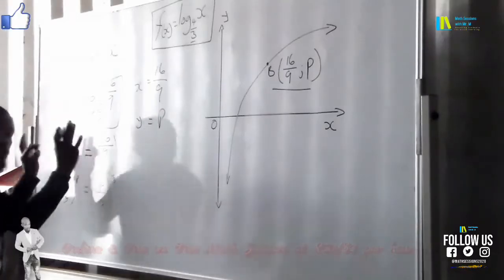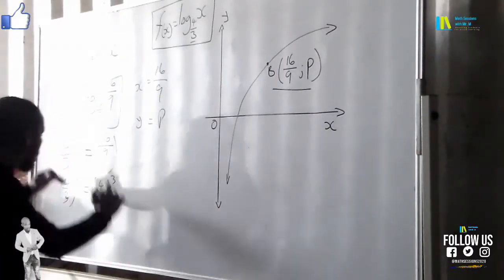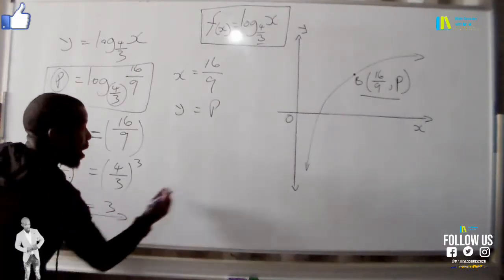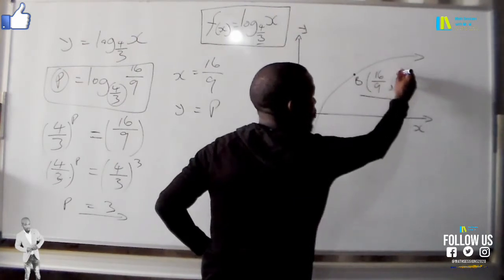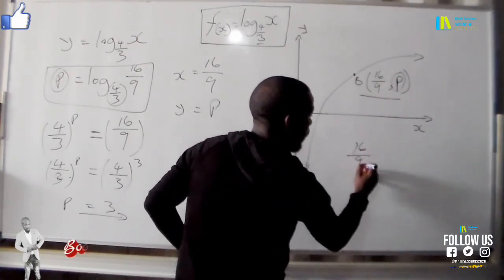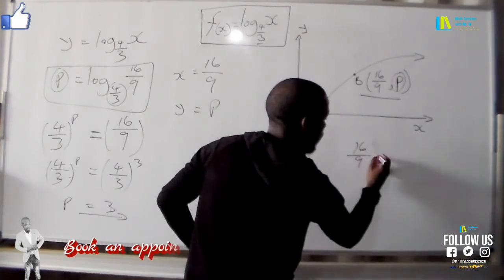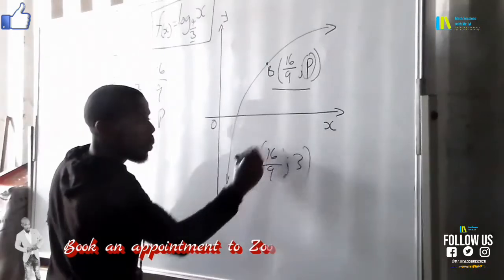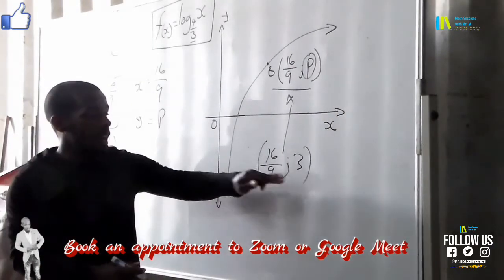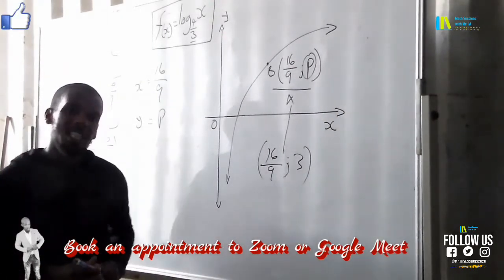If the bases now are the same we just drop now the exponents, which is p equals 2. We have basically found now the value of p which has now become, so we have 16/9 and y is 2. So that is the point right there, 16/9 and y is 2.